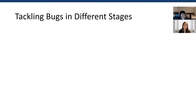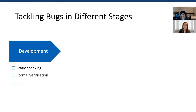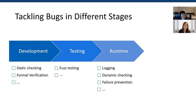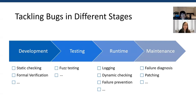Software correctness is a long-studied problem. Researchers have designed a wide spectrum of techniques to detect and fix bugs in different stages of software development and deployment. In the development phase, formal verification and static checking are typical approaches. Then software goes to testing with a set of designed inputs. Fuzz testing is the main technique covered by this year's papers. During runtime, logging, dynamic checking, and failure prevention techniques detect, diagnose, and handle bugs. Finally, bugs get manifested at runtime to diagnose and fix as part of software maintenance.